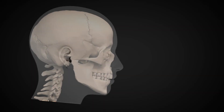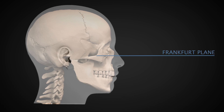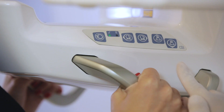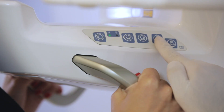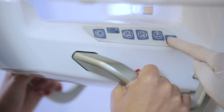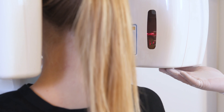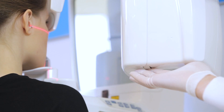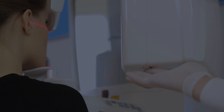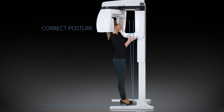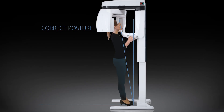To adjust the head tilt angle and obtain the correct positioning of the Frankfurt plane, the dentist uses the up and down keys and the wheel to adjust the height of the laser. It is essential that the patient holds her back in an upright, straight position.